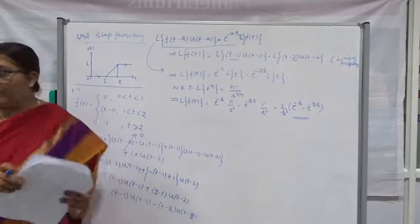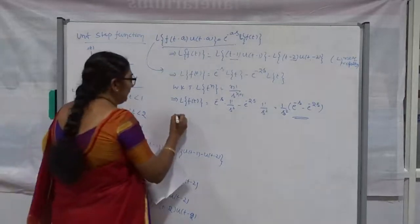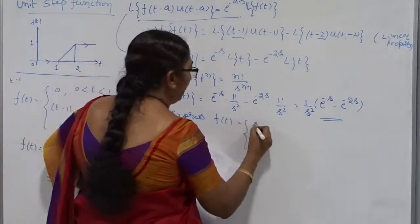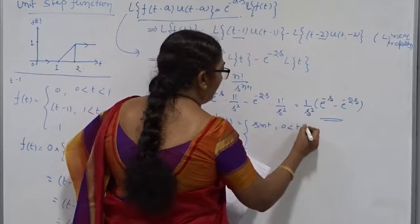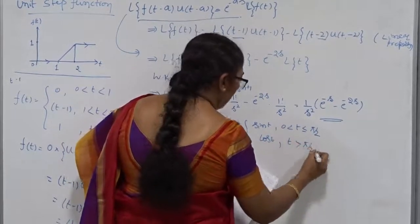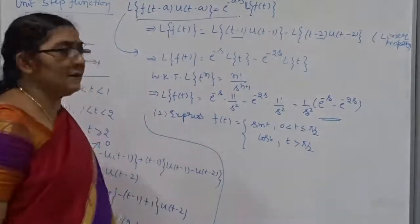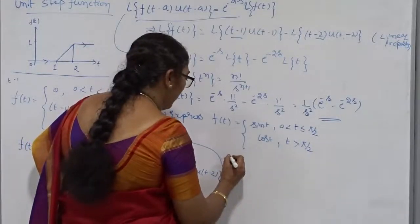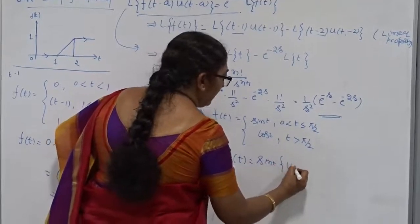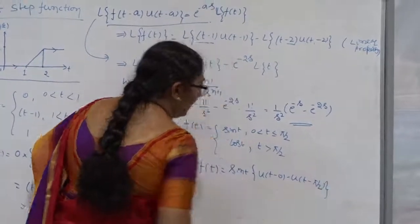Now I am going to take one more last problem. This is a very good problem. The function f of t is defined as: sin t for 0 less than t less than π/2, and cos t for t greater than π/2. Find its corresponding Laplace Transform. First, express f of t in terms of the Heaviside unit step function. This is a simple problem but it is tricky.